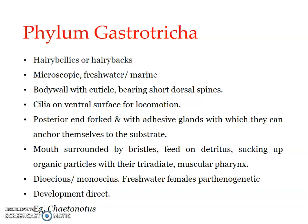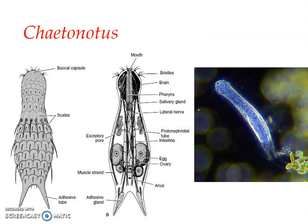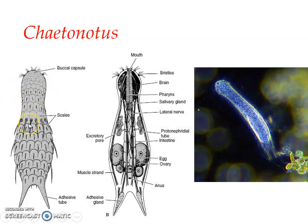Chaetonotus is a typical gastrotrican showing all the characters of the group. It is a freshwater form living in fine sediments or detritus. Its body is short, unsegmented, and covered with locomotor cilia on the ventral side. The body is elongated, dorsally arched, and ventrally flattened, differentiated into head, trunk, and a forked tail with caudal adhesive organs. The head bears the mouth, photoreceptors, chemoreceptors, and sensory bristles on either side of the mouth. The cuticle is elaborate, formed into scales, bristles, and spines.